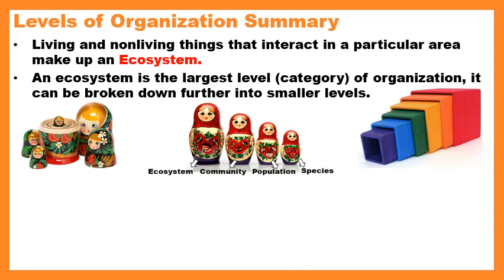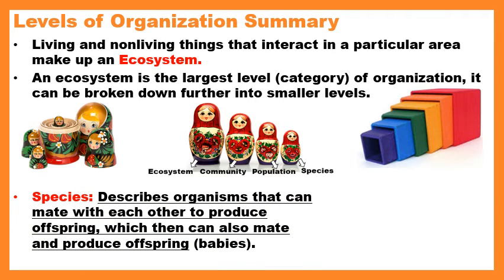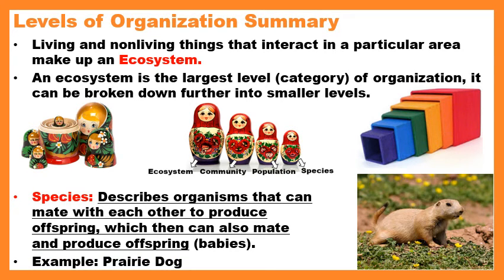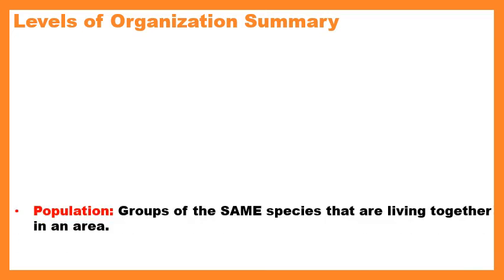A species describes an organism that can mate with another of the same kind to produce offspring, and those offspring can also mate and reproduce. Basically, it's an animal that can mate with another animal of the same kind and produce successful babies that will live, survive, and reproduce. An example is the prairie dog — a type of rodent. A prairie dog can't mate with a rat; it can only mate with another prairie dog because they're within the same species. You usually cannot mate outside of your species.